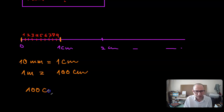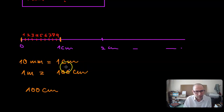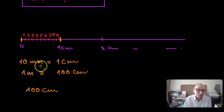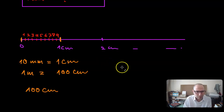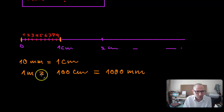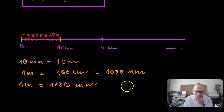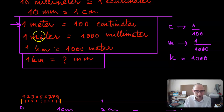To repeat: one centimeter is ten millimeters, and a hundred centimeters is a hundred times one centimeter, so it must also be a hundred times ten millimeters. A hundred times ten is a thousand, so that's a thousand millimeters. This means one meter is the same thing as one thousand millimeters, which is what we have written here.